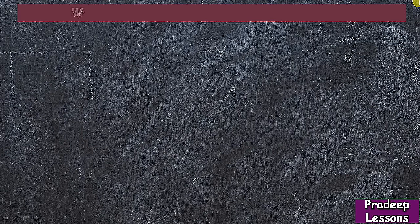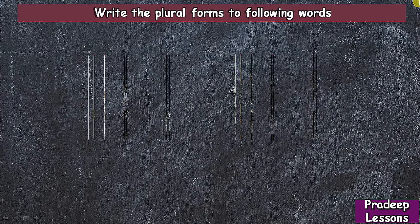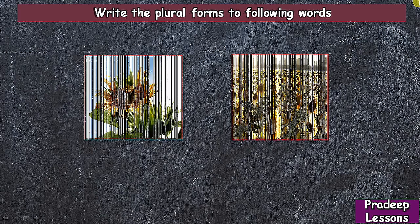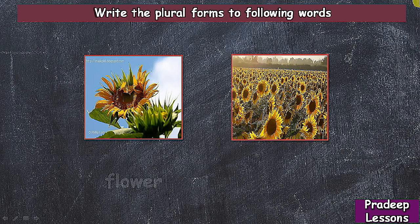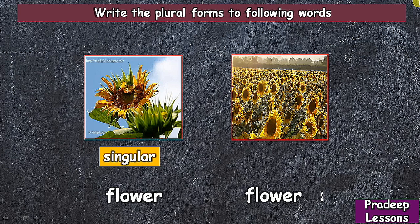Write the plural forms of the following words. In this picture there is only one flower — that is called singular. In another picture there is more than one flower, so it is plural — flowers.